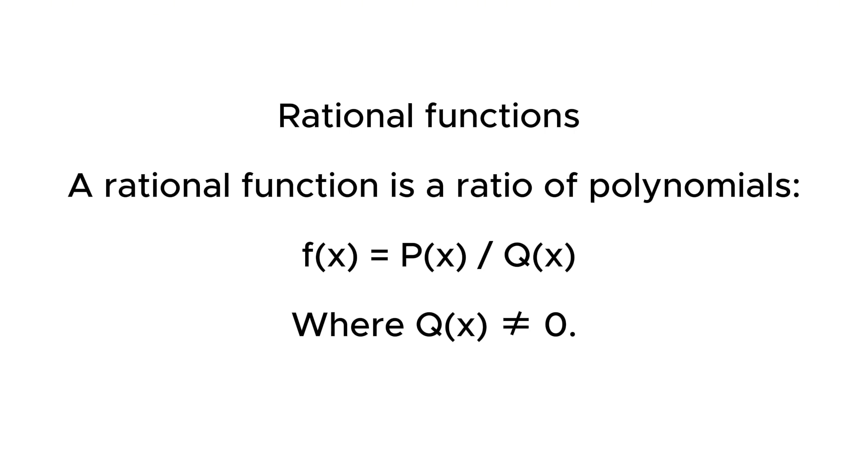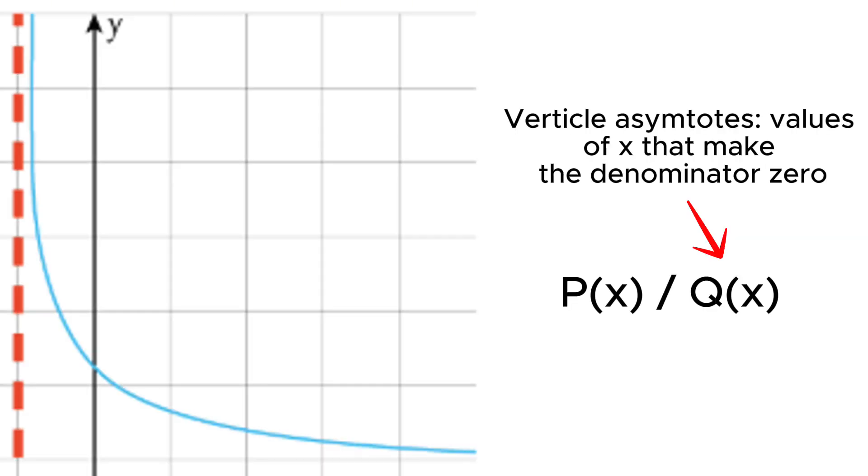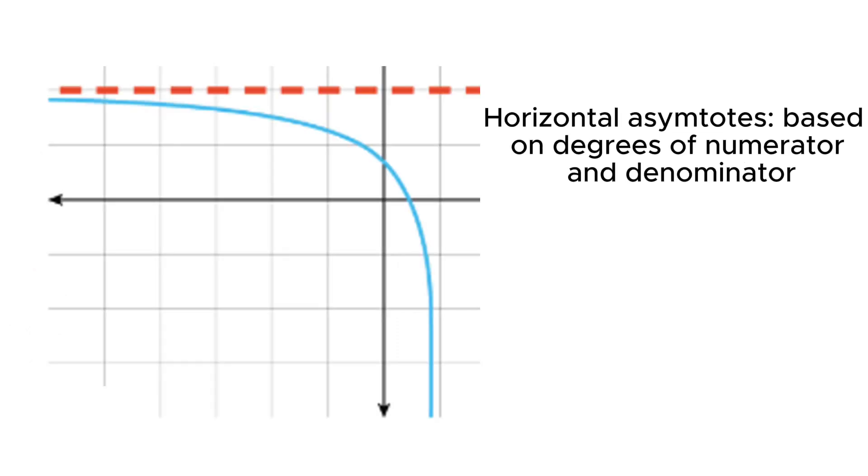A rational function is a function of polynomials: f of x equals p of x divided by q of x. Vertical asymptotes happen when q of x equals zero. Horizontal asymptotes depend on the degrees of numerator and denominator.